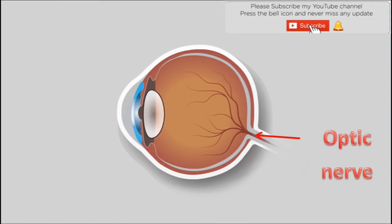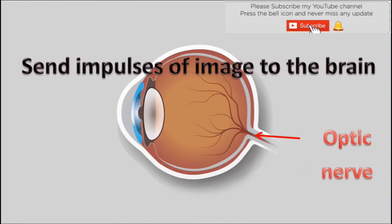Optic nerve — it sends impulses of the image formed on the retina to the brain.